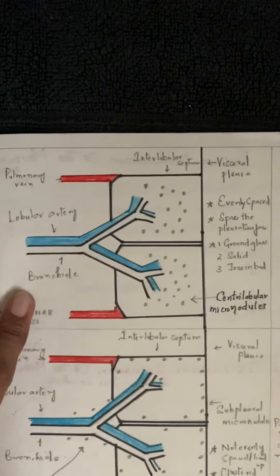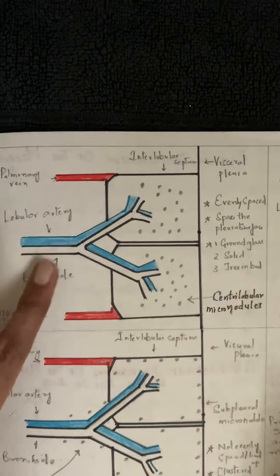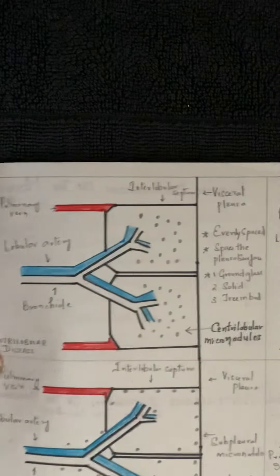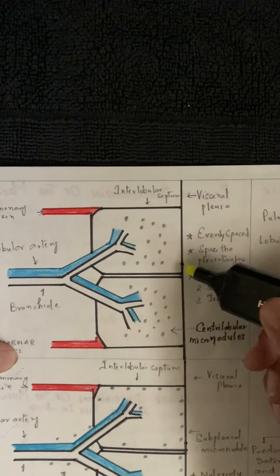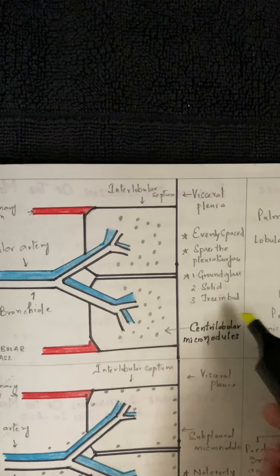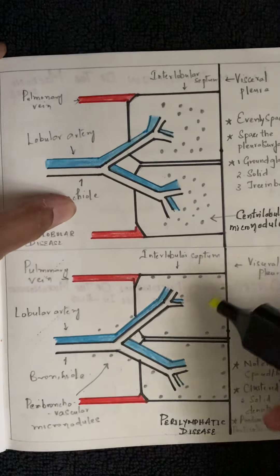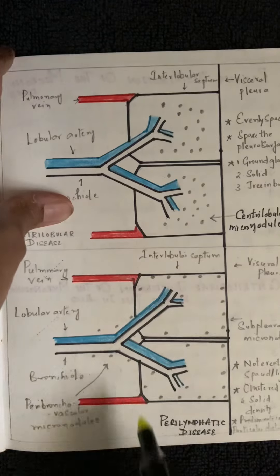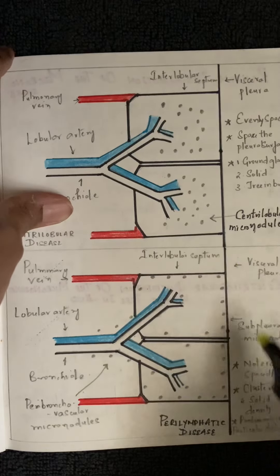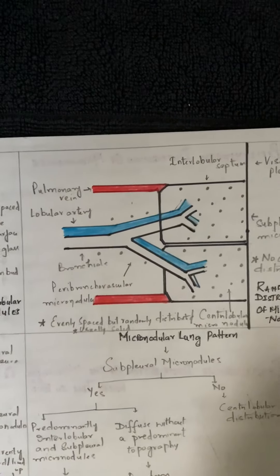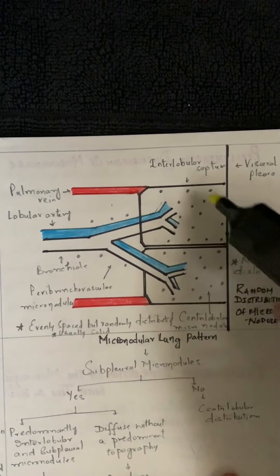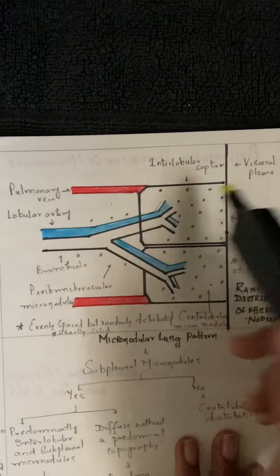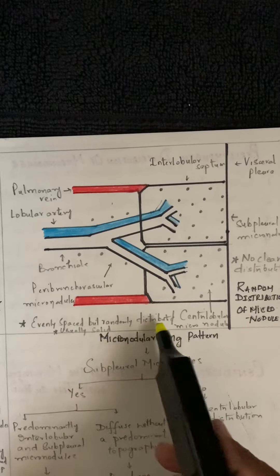To recap: centrilobular nodules are evenly spaced and spare the pleura, presenting as ground-glass, solid, or tree-in-bud. Perilymphatic nodules are not evenly spaced — they are clustered, solid, and predominant in one region: peribronchovascular, interlobular, or subpleural. Random nodules have no clear distribution — they can appear in the centrilobular, subpleural, peribronchovascular, or interlobular regions — evenly spaced but randomly distributed, and usually solid.